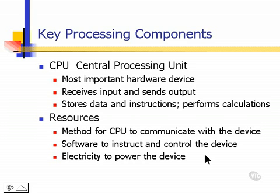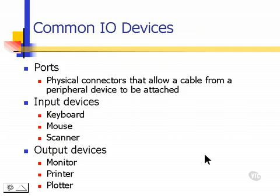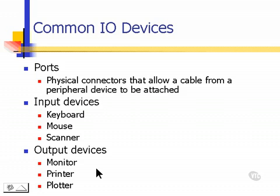Common input-output devices include ports, which are physical connectors that allow a cable from a peripheral device to be attached. Input devices include keyboards, mice, or scanners. Output devices include monitors, printers, or plotters.